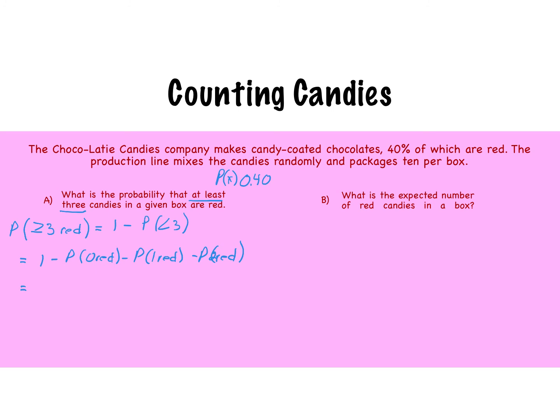So let's key in our numbers. So 1 minus the probability of 0 red. So out of the 10 candies we're choosing 0 red ones. So the probability of success is 0.4 and the exponent value is 0. The exponent value for failure is 10. So notice that each one of these situations now is going to add up to 10.